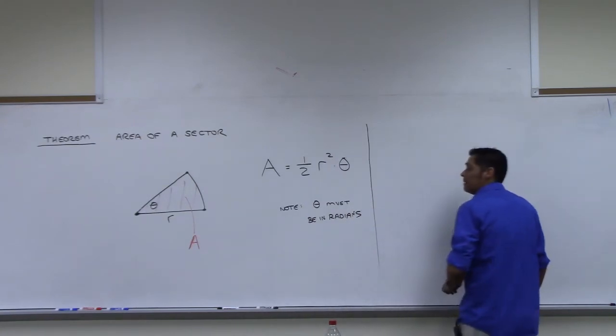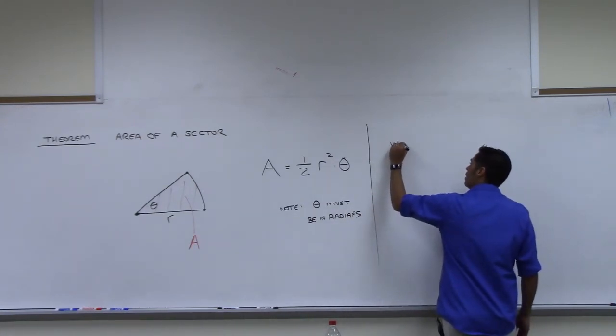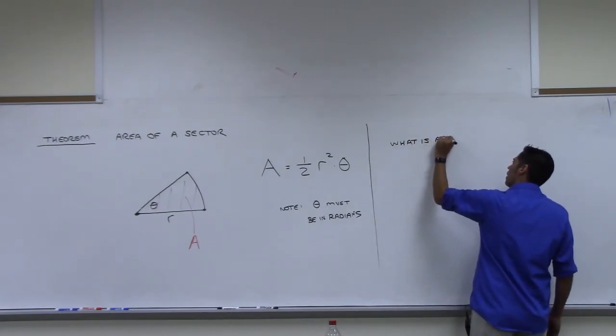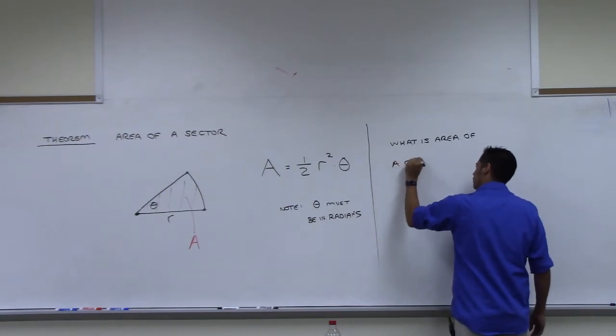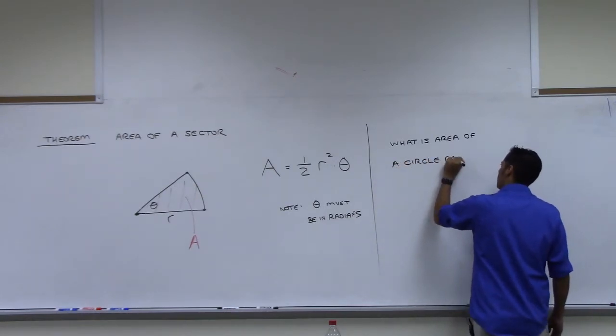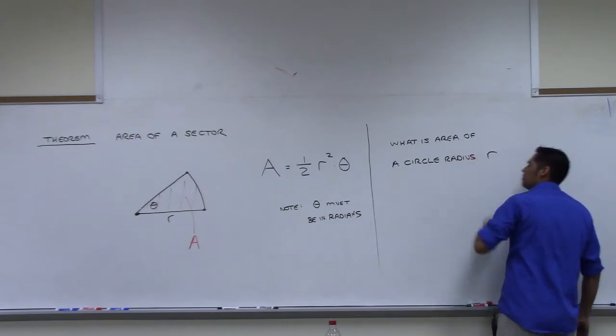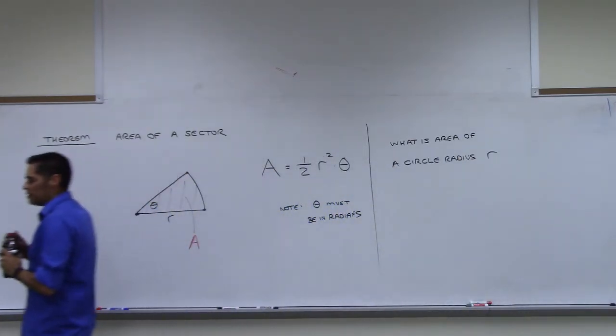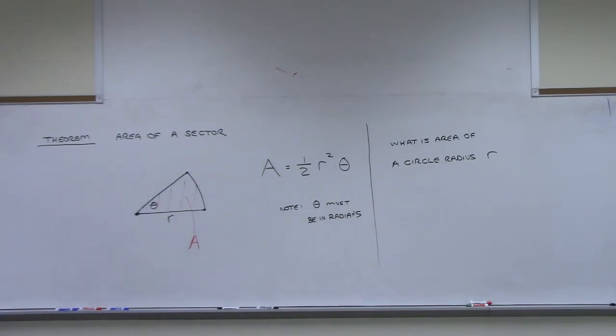That's not going to be as much of a problem for us now, right? Because if somebody gives us an angle in degrees, we can convert to radians and then use the formula. So let me ask this. What is area of a circle radius r? This should be something that rings a bell. You should be, oh, I know what the area of a circle is. Someone told me that a long time ago. What is the area of a circle? Pi r-squared.